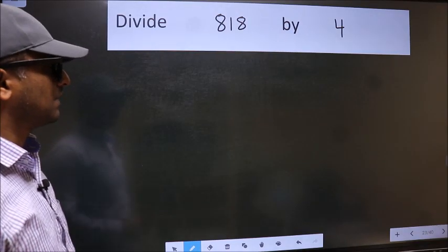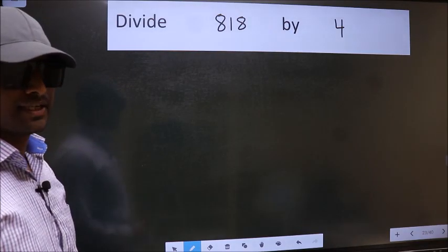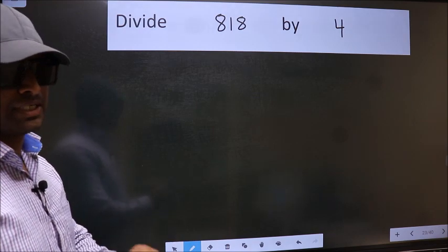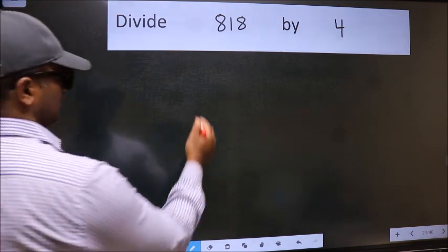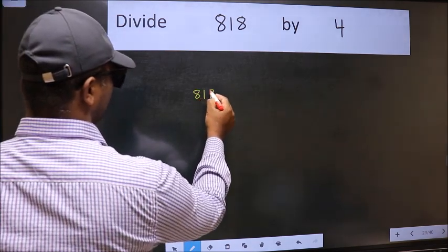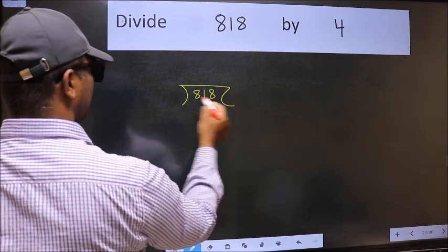Divide 818 by 4. To do this division, we should frame it in this way. 818 here and 4 here.